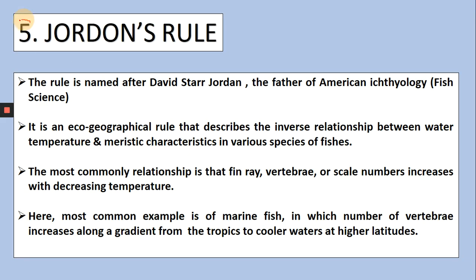The next and fifth important rule of ecology is Jordan's Rule. As I had told you, the rules and principles given in ecology are named after the scientists or ecologists who discovered them. The rule known as Jordan's Rule was discovered and named basically after David Starr Jordan, who worked on fishes. He was the father of ichthyology and an American ecologist. His work was basically on fish, and so his rule was also about fish.